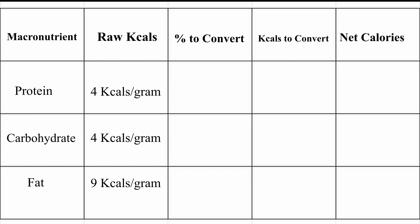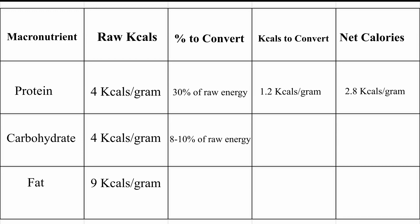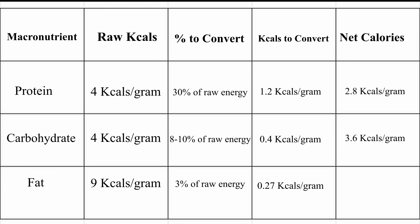Converting protein from its raw form to a usable form takes about 30% of its energy — about 1.2 calories — so the net calories from one gram of protein is about 2.8 calories. For carbohydrates, that number is anywhere between 8 to 10%, which is about 0.4 calories per gram, giving a net of roughly 3.6 calories. For fats it's about 3% — that's 3% of 9 calories, approximately 0.27 calories — so the net caloric value of every gram of fat is about 8.73 calories.